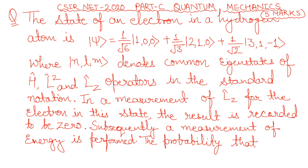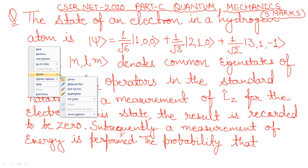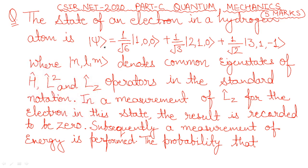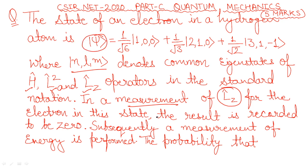The question gives us the state of an electron in a hydrogen atom, represented with a psi expression. Here NLM denotes common eigenstates of H, L-squared, and LZ operators in standard notation. In a measurement of LZ for the electron in this given state, the result is recorded to be 0.